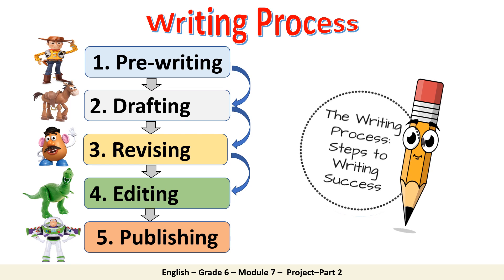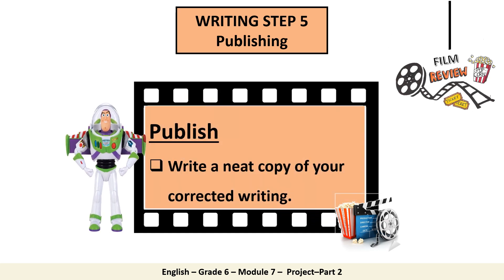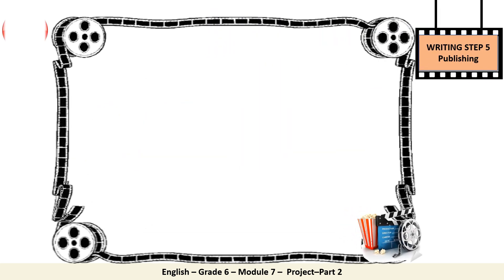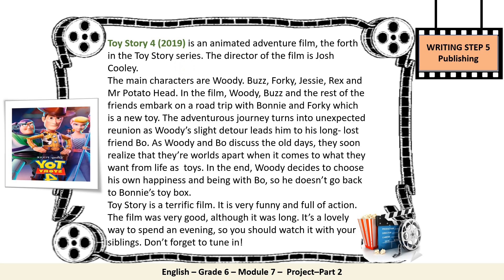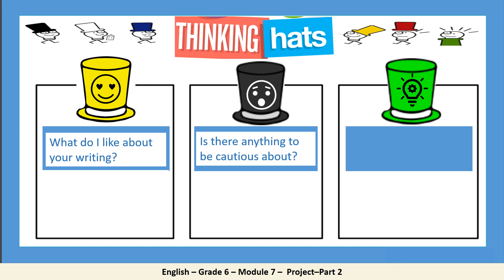Having finished editing, let's move to the last step, which is publishing. In this step, create a neat copy of your corrected writing. Now pause and start writing. Let's check — what a nice work, everyone! Having published your article, it's time to give you some feedback. I'll be using the yellow hat to tell you something I liked, the black hat for something to be cautious about, and the green hat to tell you how to improve.